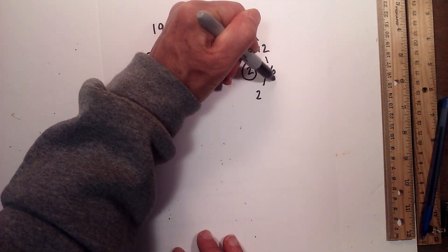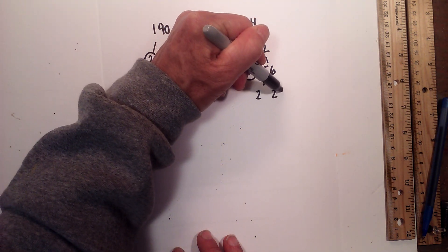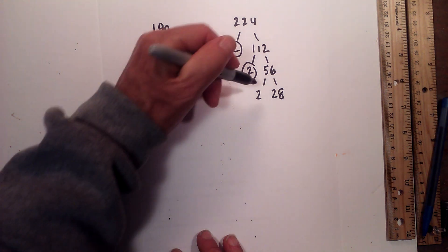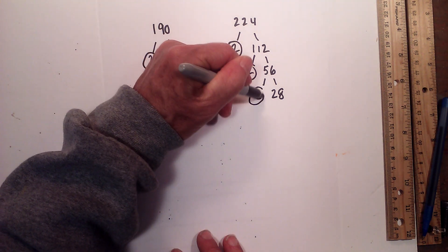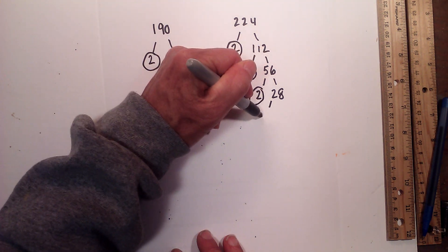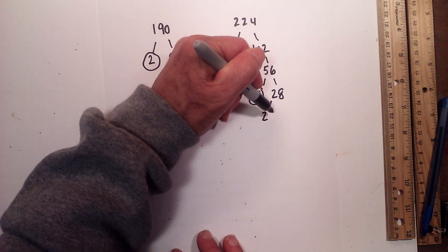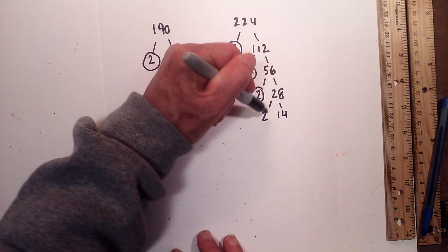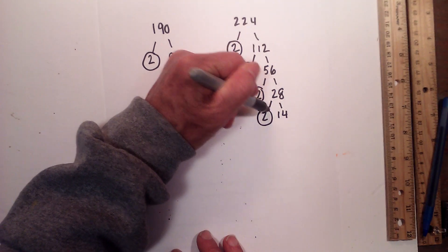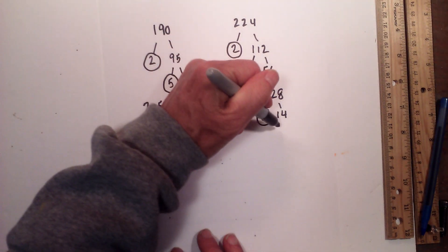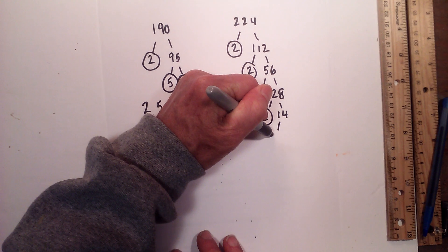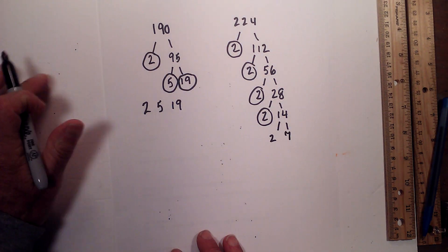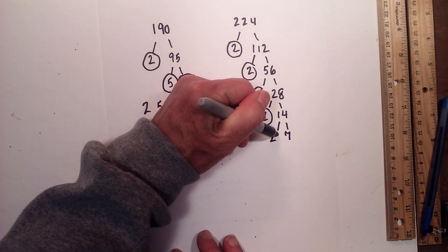Now 2 times 28 equals 56. Circle the 2 because it is prime. Now 2 times 14 equals 28. Circle the 2 because it is prime, and now 2 times 7 is equal to 14.